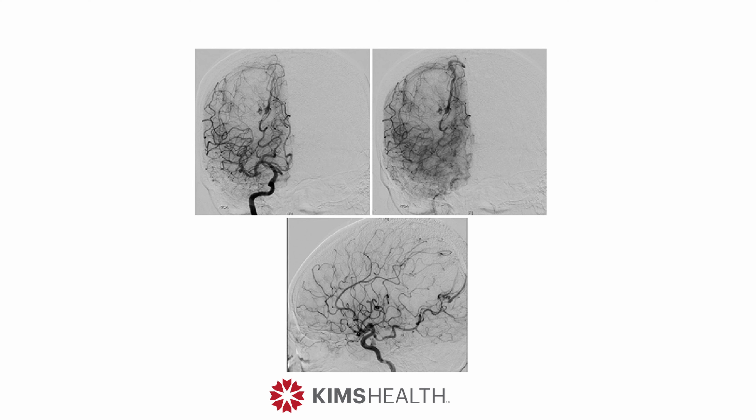Once the scan is done, the patient will need to undergo another angiogram, known as a digital subtraction angiogram, which defines the arterial anatomy and the venous outflow. This angiogram helps in the definitive treatment of the AV malformation.